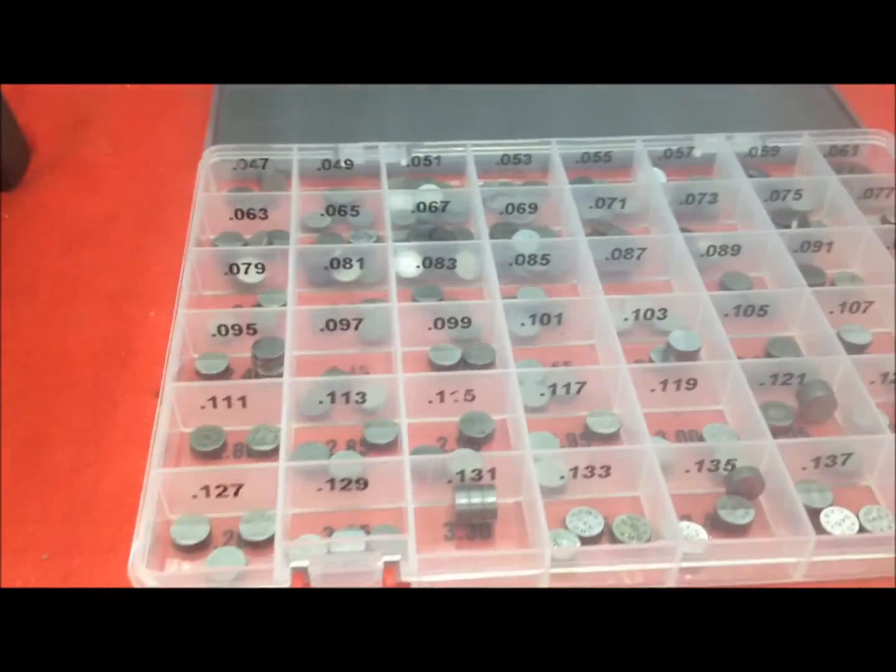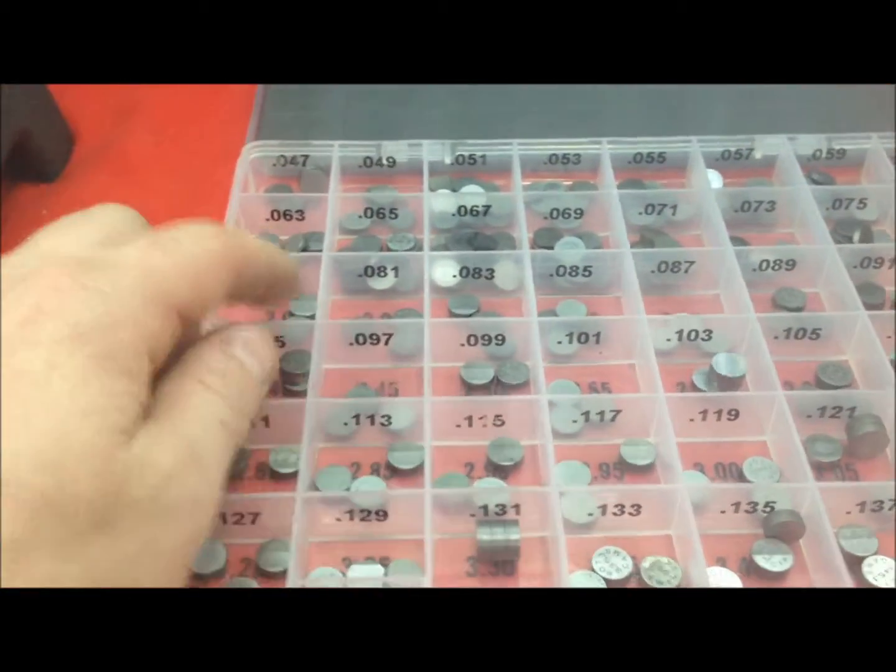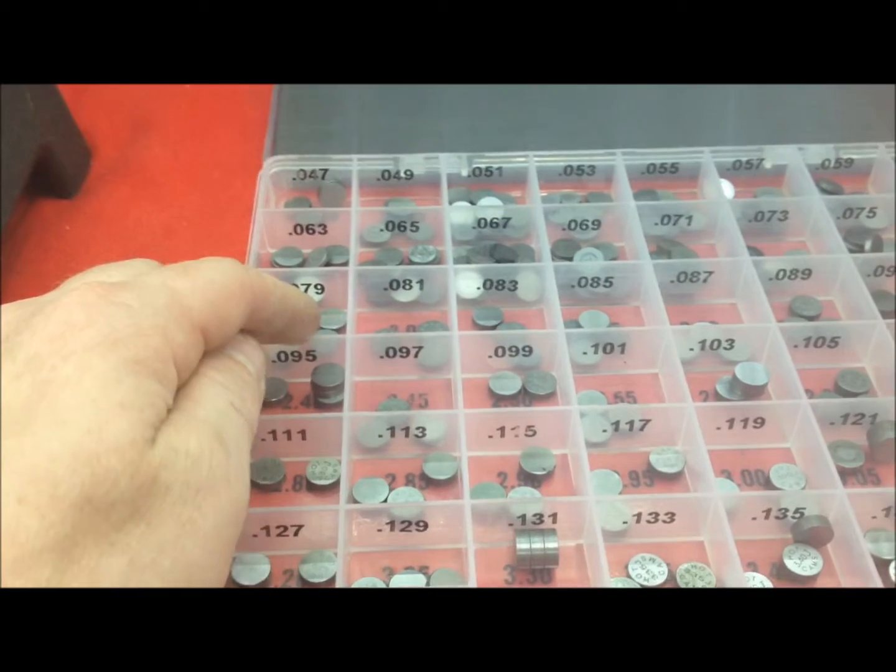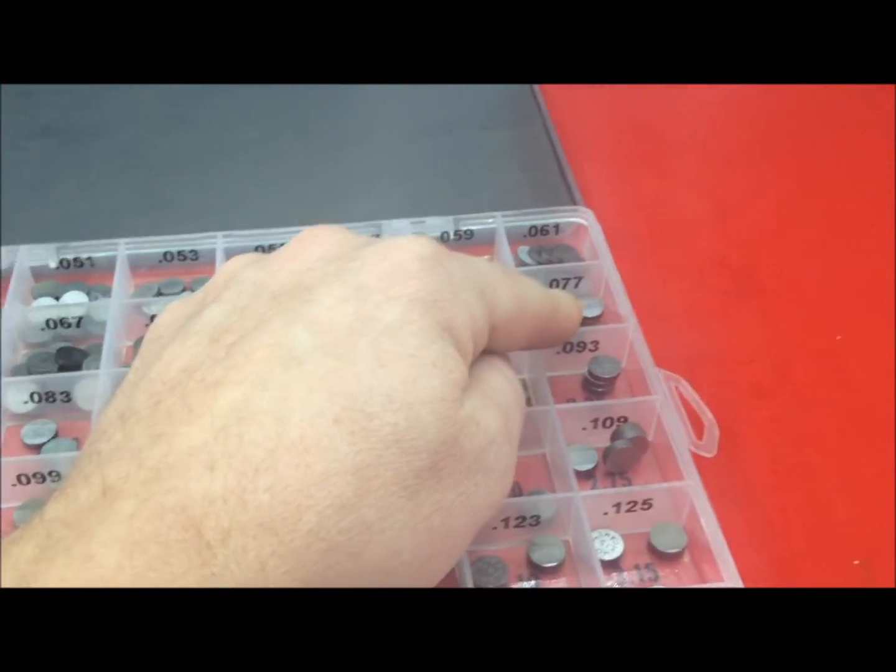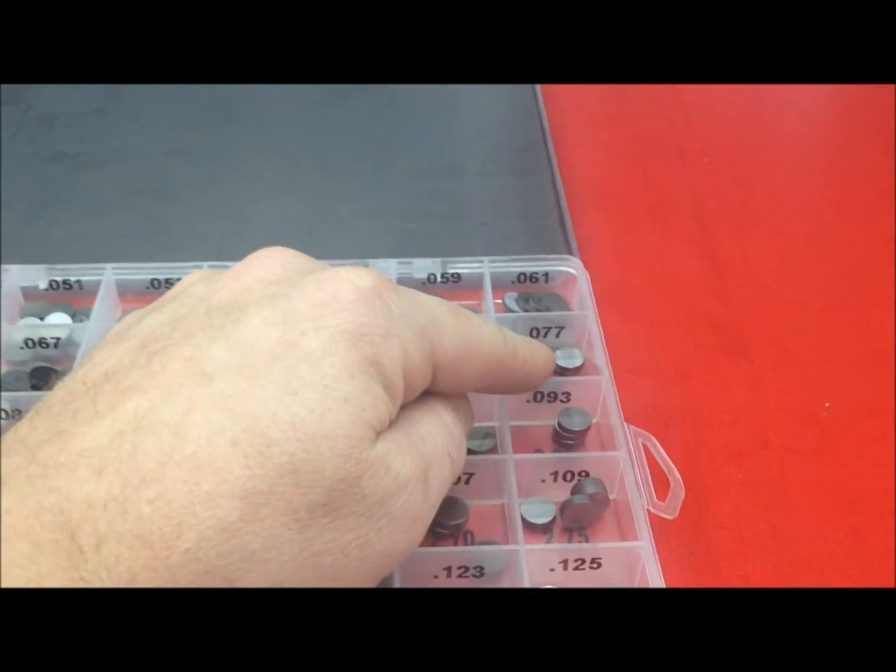So let's say if we need to go to a 2,000 smaller shim, we're at 79, we're going to go down to a 77, which is going to increase our gap at our valve clearance.